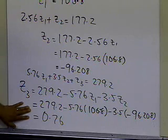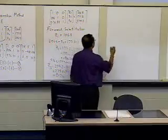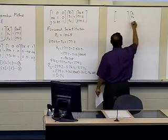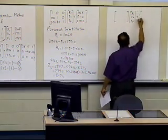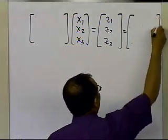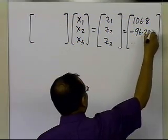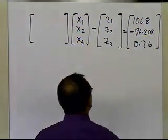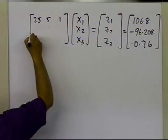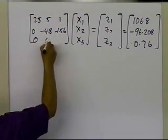These Z values will now be used to find X1, X2, and X3. We solve U times X equals Z, where X is [x1, x2, x3] and Z is [106.8, minus 96.208, 0.76]. U is the upper triangular matrix: 25, 5, 1; 0, minus 4.8, minus 1.56; 0, 0, 0.7.